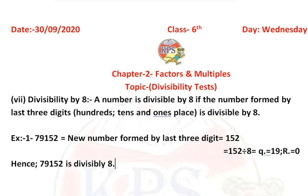So hence we can say the given number 79,152 is divisible by 8. If the last three digit number is not exactly divisible by 8, then the given number is also not divisible by 8.